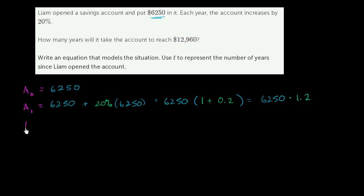Now, how much is he going to have at the end of two years? Well, he's going to have the same amount that he had at the end of one year times 1.2, because it grew by 20% again. So he's going to have 6,250 times 1.2 times 1.2, which is equal to 6,250 times 1.2 squared.